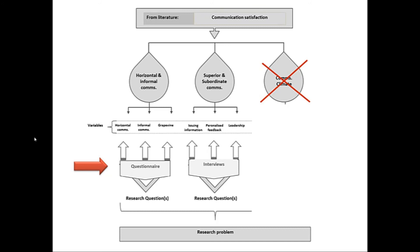When I'm done reading at this point, I can see the variables I'll be focusing on are horizontal communication, informal communication, the grapevine, issuing information, personalized feedback, and leadership. I then decide how to measure that within my organization — perhaps a questionnaire for the first concept's constructs and interviews for the second. The data from the questionnaire and interviews will move on to answer my research questions, and my research questions will eventually lead through to answering my research problem. That's how your literature review permeates through into every aspect of the research process.